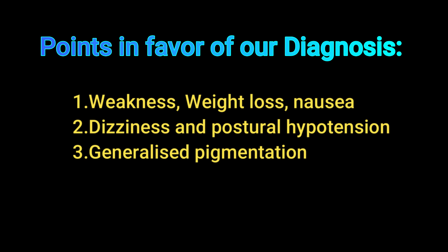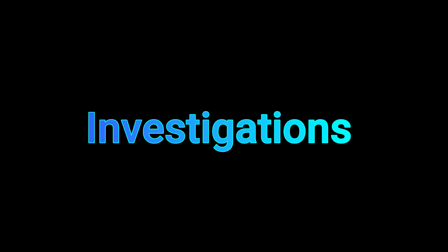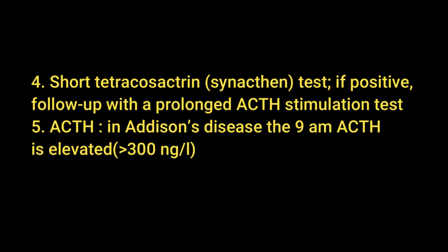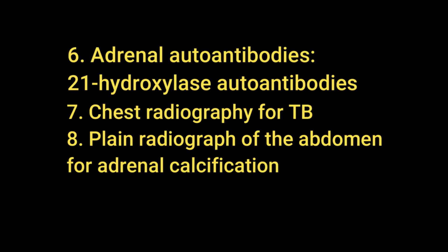For investigations, we plan a full blood count, which may show lymphocytosis or eosinophilia; serum electrolytes to check for hyponatremia, hyperkalemia, hyperchloremic acidosis, and hypercalcemia; and blood glucose looking for hypoglycemia. We should perform a short Synacthen test, and if positive, follow up with a prolonged ACTH stimulation test. If ACTH is more than 300 nanograms per liter in the morning at 9 a.m., this suggests Addison's disease.